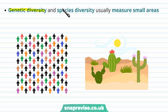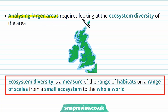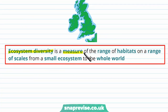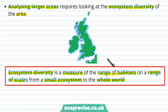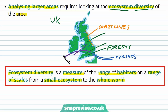When measuring genetic diversity and species diversity, we usually focus on small areas, like the cacti of a patch of desert. But to measure a larger area, such as a region of a country or an entire country, we look at ecosystem diversity. Ecosystem diversity is a measure of the range of habitats on a range of scales, from a small ecosystem to the whole world. Looking at the UK, for example, we find various forests, coastline habitats, marshlands and rivers, and urban areas. Ecosystem diversity examines how many different types of ecosystem exist in a region, and therefore the diversity of life within those ecosystems.